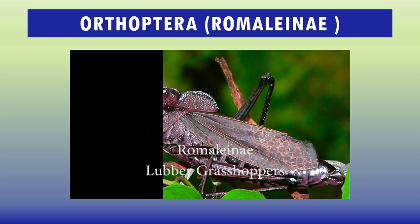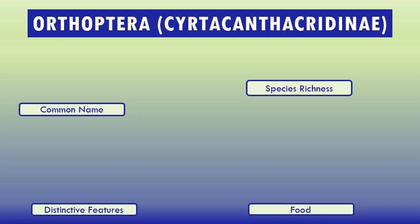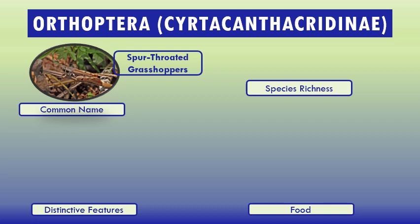Subfamily Cyrtacanthacridinae, common name spur-throated grasshoppers. It includes species of locusts — short-horn grasshoppers that undergo phase polymorphism and are among the most important pests of Sub-Saharan Africa. They include the desert locust and the red locust, with the related Bombay locust in Asia. One characteristic of members of this subfamily is the prominent spine between the front legs.